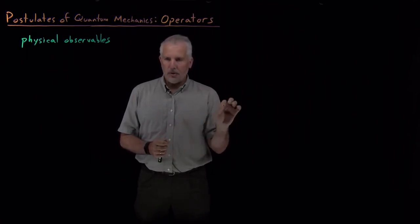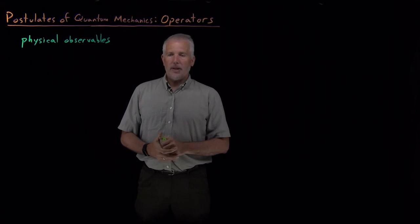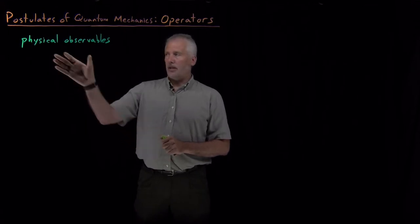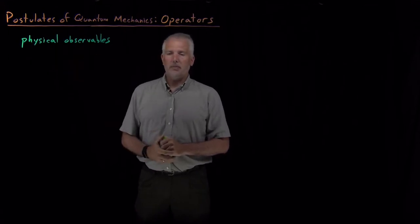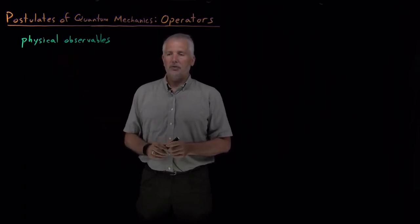But properties like mass or energy or momentum or things like that that describe the physical properties of a system that are not ambiguous or subjective. Those are the ones that we talk about as physical observables.